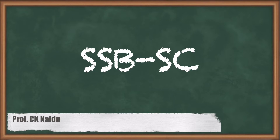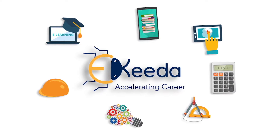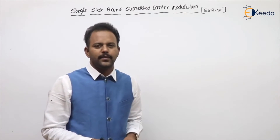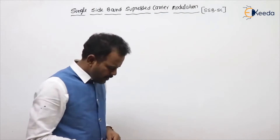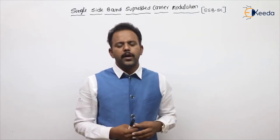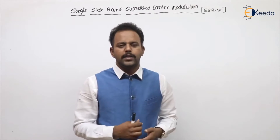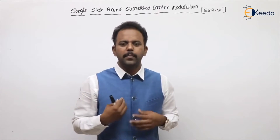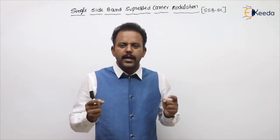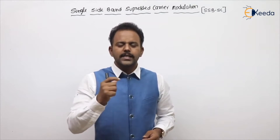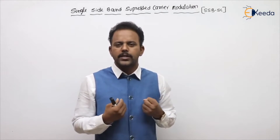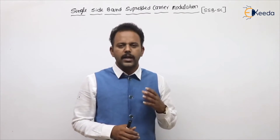Hello students, in this video we will be learning about SSBSC — Single Sideband Suppressed Carrier modulation. This is one of the variants of amplitude modulation. In amplitude modulation we have a carrier, upper sideband, and lower sideband. In SSBSC, the carrier and one of the sidebands are suppressed, so the remaining signal has only one sideband. That is why it is called Single Sideband Suppressed Carrier modulation. Compared to AM and DSBSC, we can save bandwidth and power.